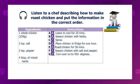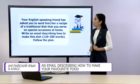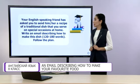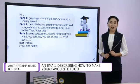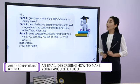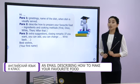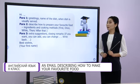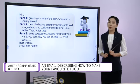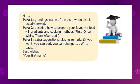Well done, students. Now, your turn. Your English-speaking friend has asked you to send him or her a recipe of a traditional dish that you serve on special occasions at home. Write an email describing how to make this dish. Follow the plan. First, greet your friend. Then, in paragraph one, write greetings, name of the dish, and when the dish is usually served. In paragraph two, describe how to prepare your favourite food — ingredients and cooking methods. Use the appropriate linking words. In paragraph three, write extra suggestions and closing remarks. Then, best wishes and don't forget to write your first name.